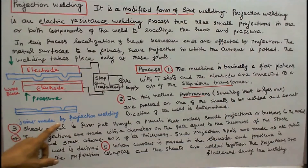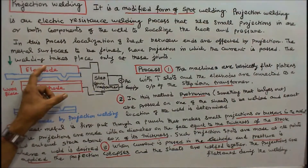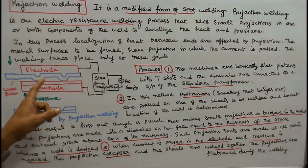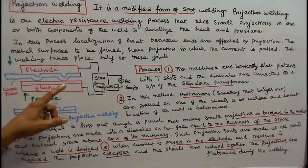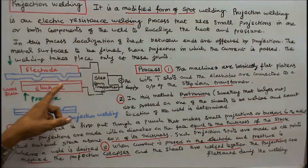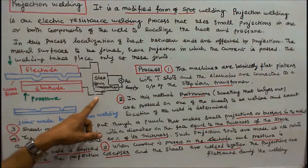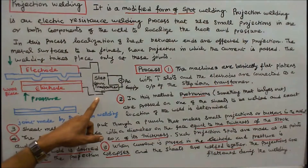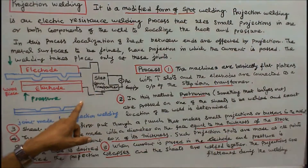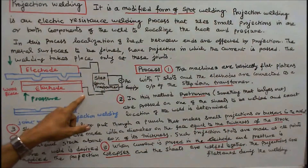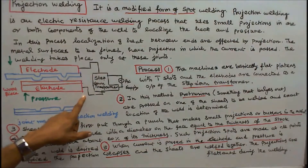This is a joint made by projection welding. Now we will see the process of projection welding. Number 1: The machines are basically flat platens with T-slots, and the electrodes are connected to the output of the step-down transformer. Number 2: In this method, protrusions — meaning something that bulges out — are pressed on one of the sheets to be welded.